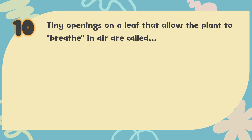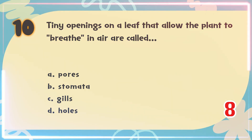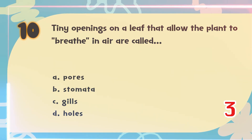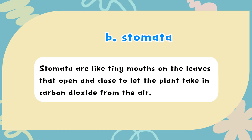Number 10: Tiny openings on a leaf that allow the plant to breathe in air are called — A. Pores, B. Stomata, C. Gills, D. Holes. The correct answer is B. Stomata. Stomata are like tiny mouths on the leaves that open and close to let the plant take in carbon dioxide from the air.